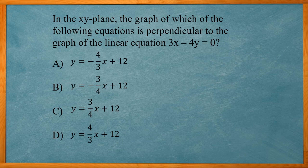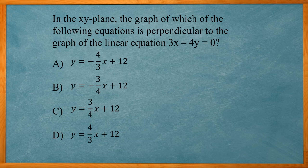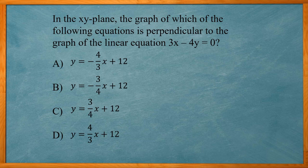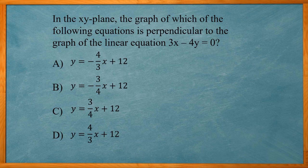We have one line, 3x minus 4y equals zero, that is perpendicular to one of these answer choices. So our first goal is to find out the slope of the first equation here, the 3x minus 4y equals zero.